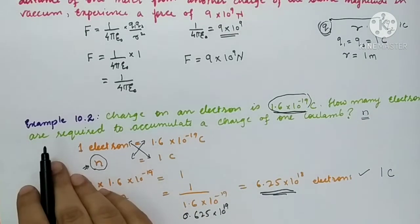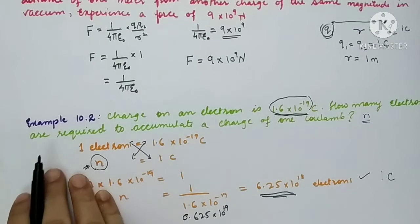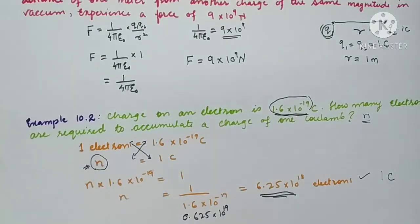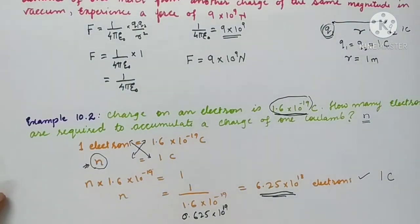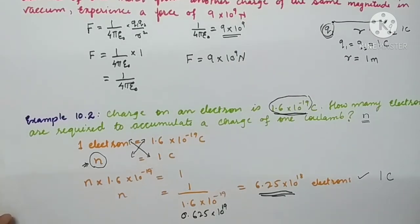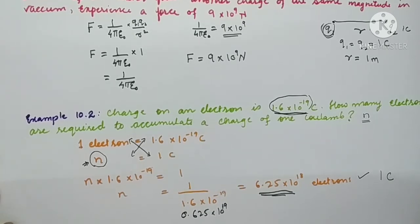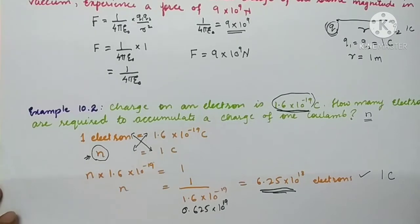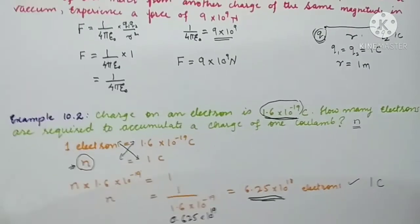Now let's move further. Till now we have studied the scalar form of Coulomb's law. If we are asked to show the direction of the forces as well, we need to study the vector form of Coulomb's law.